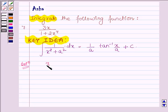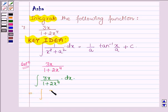The given function is 3x upon 1 plus 2x raised to the power 4. Now we have to integrate this function with respect to x. Therefore we have integral 3x upon 1 plus 2x raised to the power 4 dx. This can be written as integral 3x dx upon 1 square plus root 2 into x square whole square.